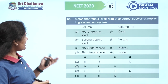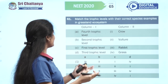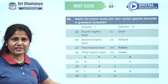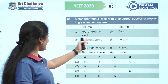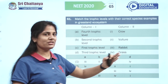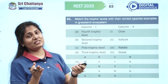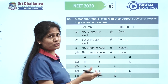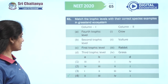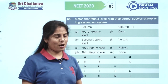Match the trophic levels with their correct species. The fourth trophic level is obviously vulture — A2 — and we have only one option there. From high school level studies also you should be able to answer such a food chain question. The fourth option is your right option.